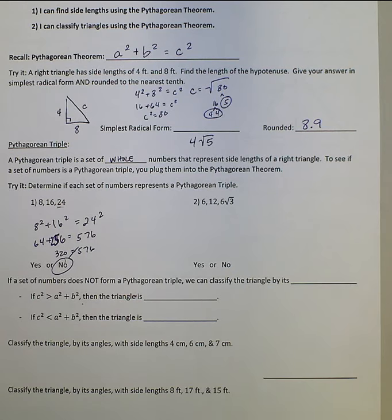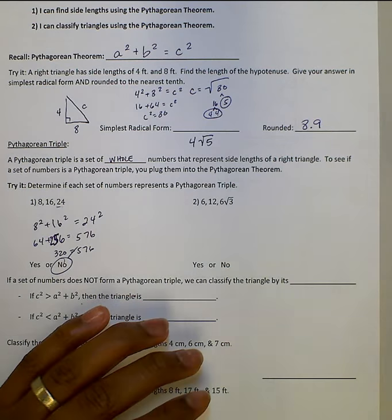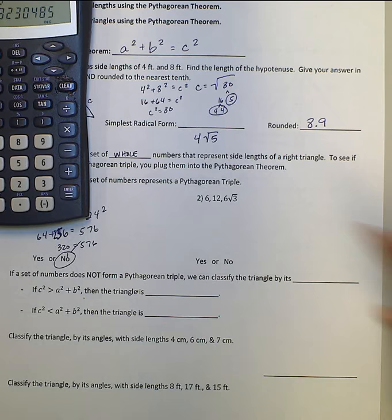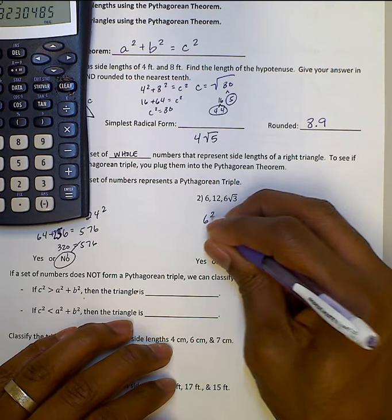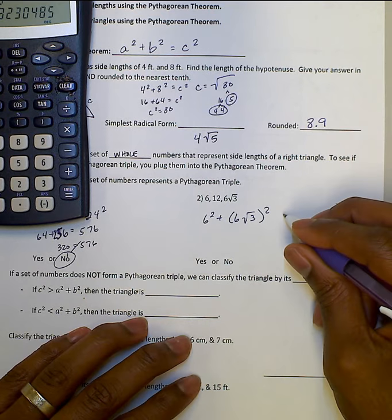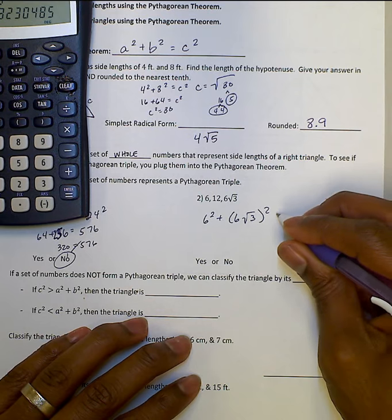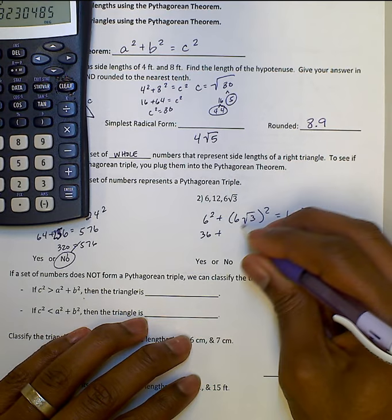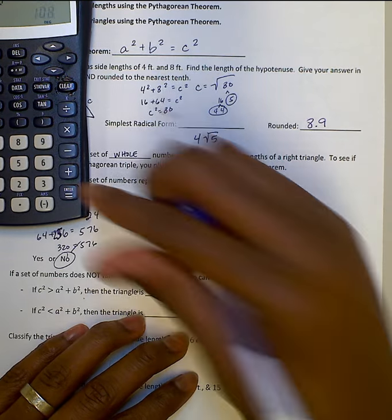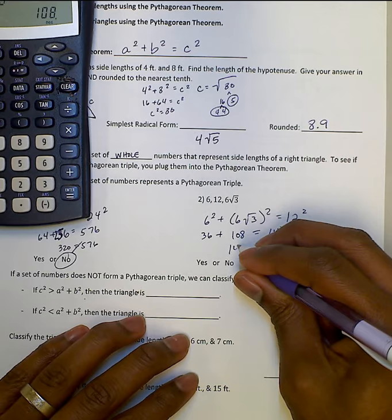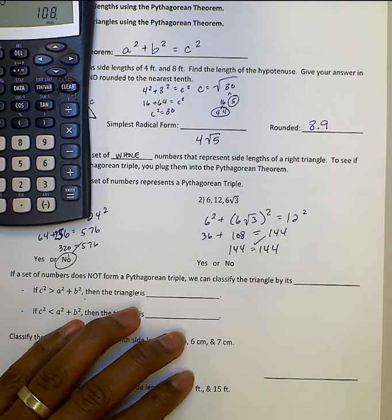Determine if this is a Pythagorean triple: 6, 6 radical 3, 12. In this case I don't really know what 6 radical 3 is, but I think 6 radical 3 has to be less than 12, and it is. So 6 squared plus 6 radical 3 squared equals 12 squared. 36 plus 36 times 3 equals 144. 144 equals 144, so that works. I'll say yes.